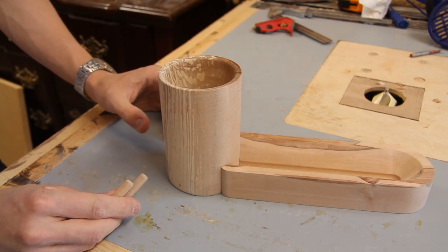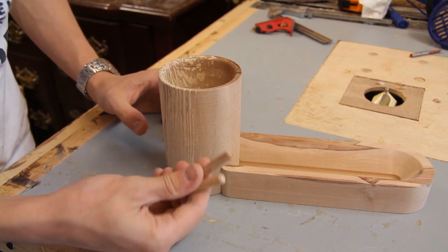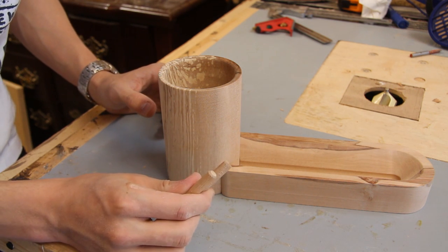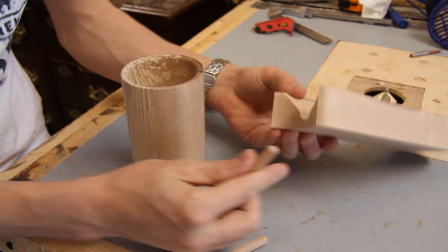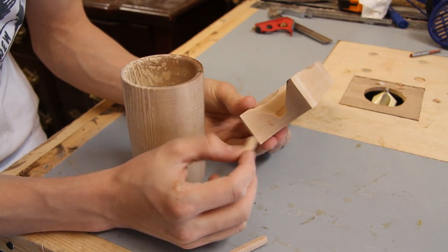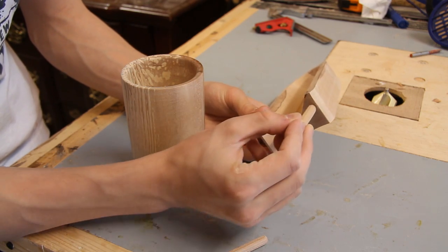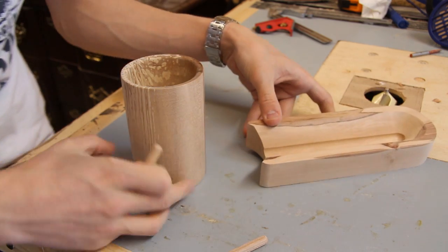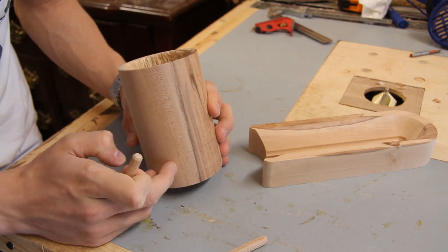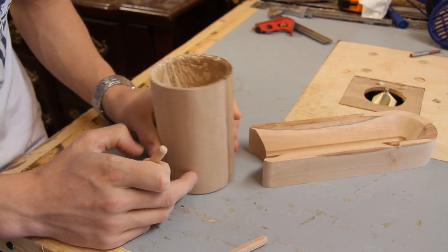Right so now I'm ready to join these parts together so hopefully to do that I'm going to be able to use a couple of dowels. Now what I plan to do is just to drill a couple of holes into here to place these dowels and then I will drill a couple of shallow holes in here to meet those.